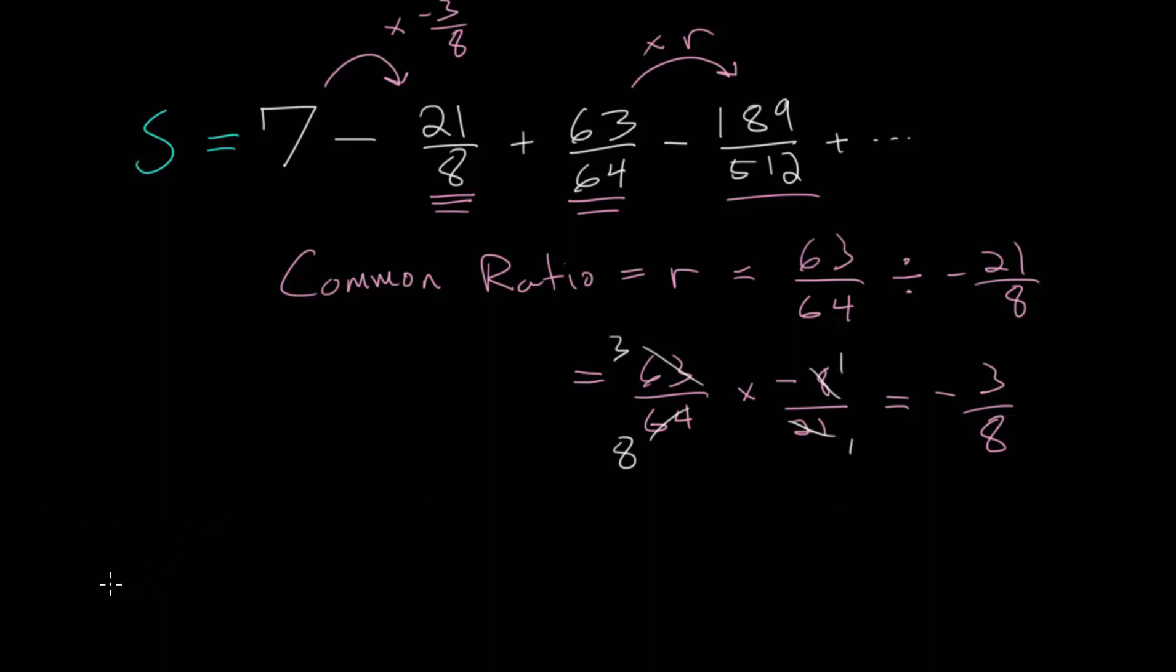So, let's multiply S by minus 3 over 8. And so, we're going to distribute minus 3 eighths to each of these terms here.